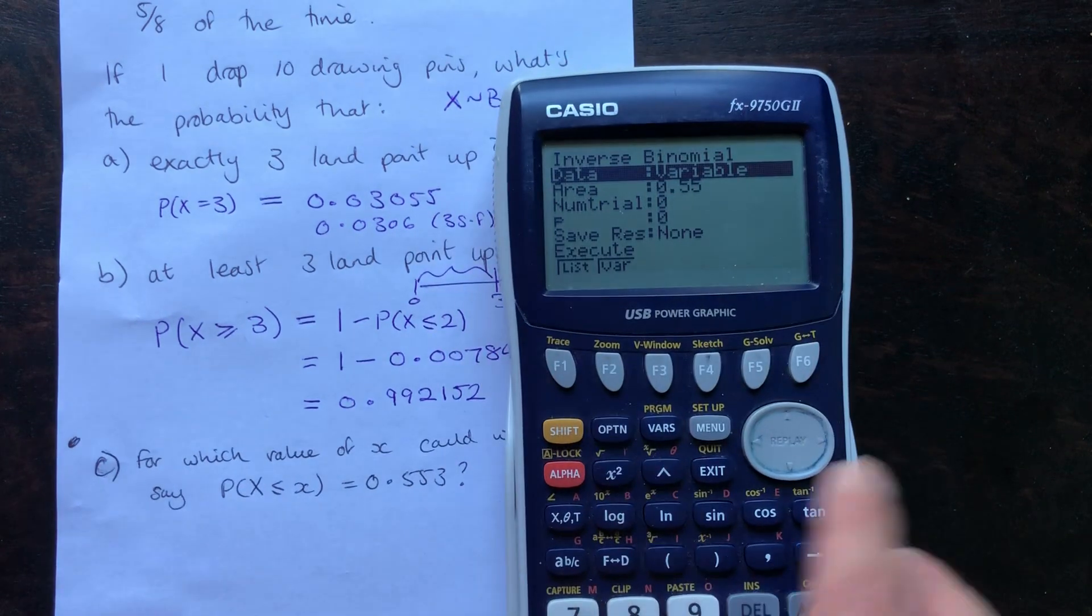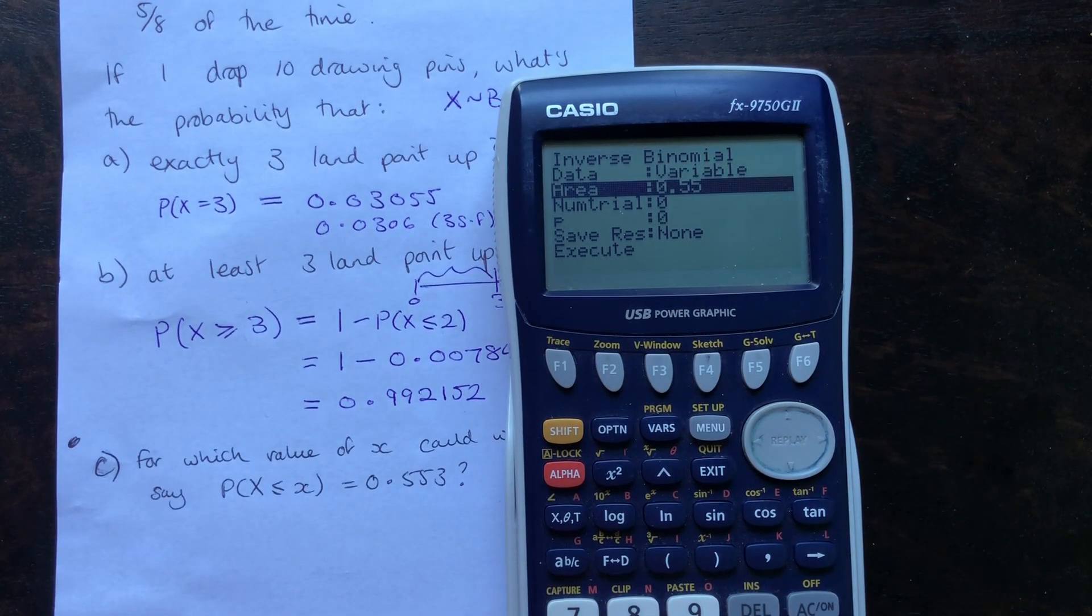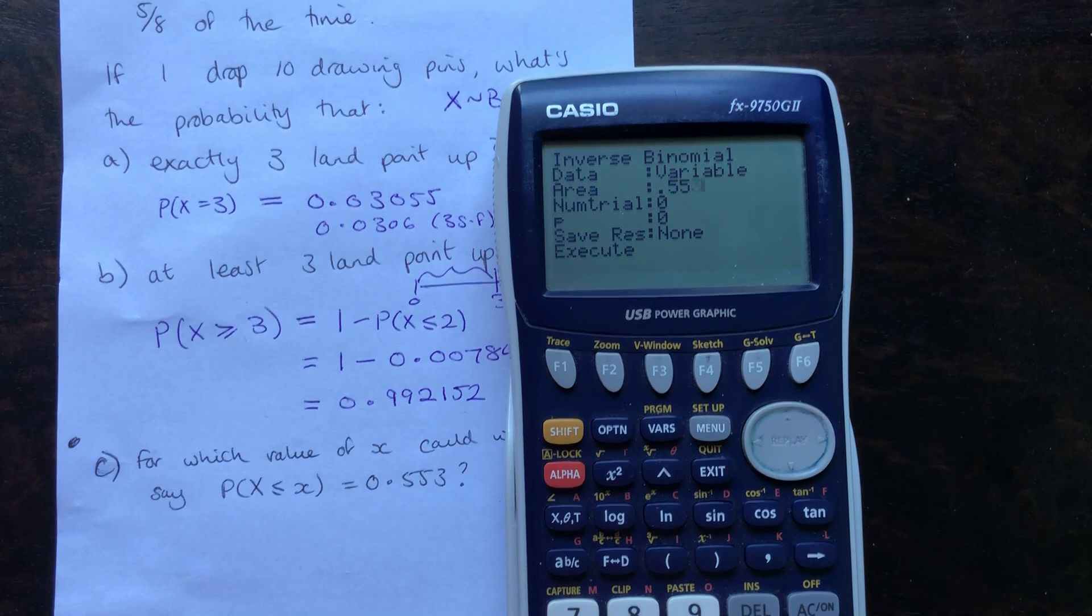This time we know a probability. This is like the inverse normal, if you've worked through those already. There's another video on that if you need it. Okay, so the area we're looking at is this 0.553.